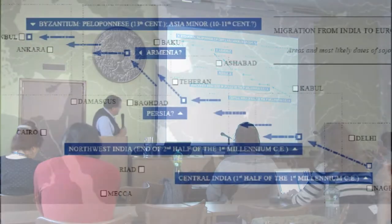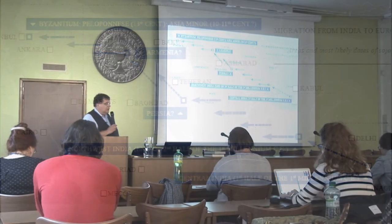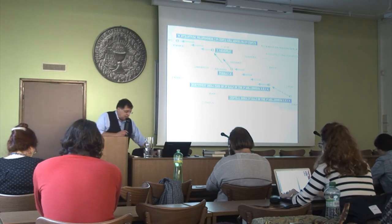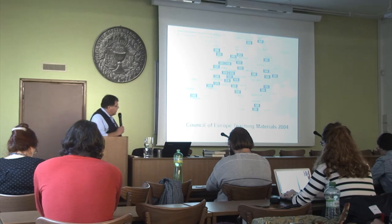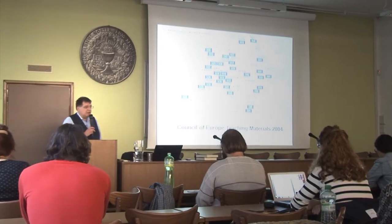The Roma originally come from north-central India. Here you have a small map from a teaching material published by the Council of Europe several years ago. They move through Persia and what is nowadays Anatolia and Turkey, then towards Byzantium, nowadays Istanbul, which they reach around the year 1000. Around the middle of the 15th century and in the 14th century, the Roma pop up in historical documents all over Europe.